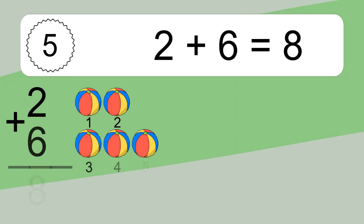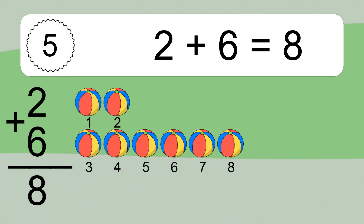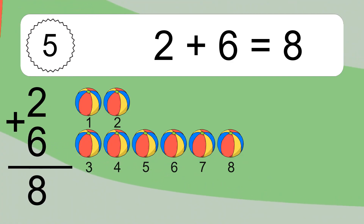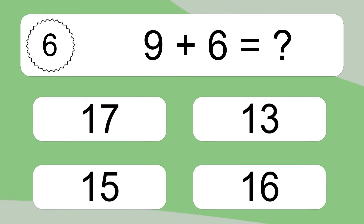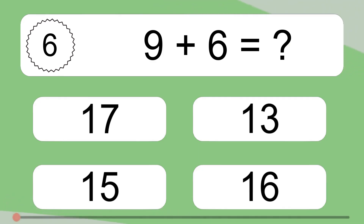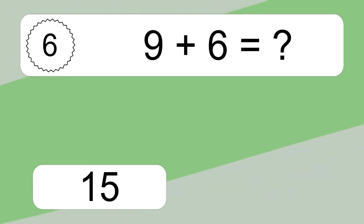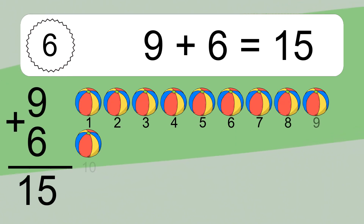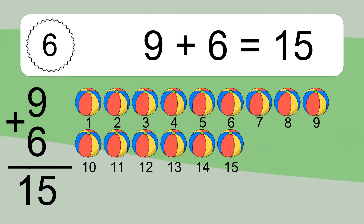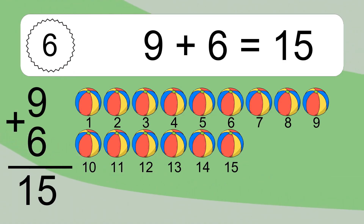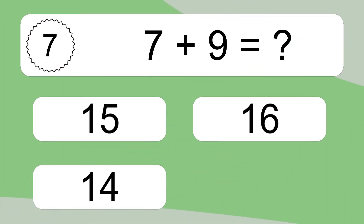Two plus six equals eight. Let's count it: one, two, three, four, five, six, seven, eight. Nine plus six equals fifteen. Let's count it: one, two, three, four, five, six, seven, eight, nine, ten, eleven, twelve, thirteen, fourteen, fifteen. Seven plus nine equals what?